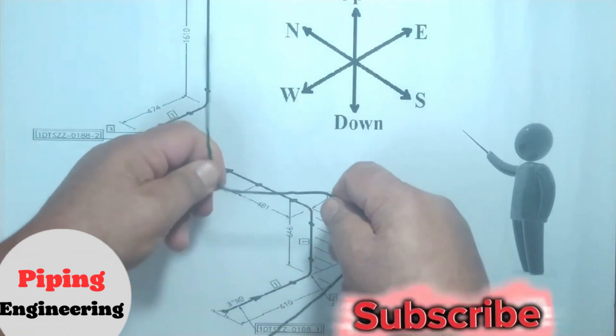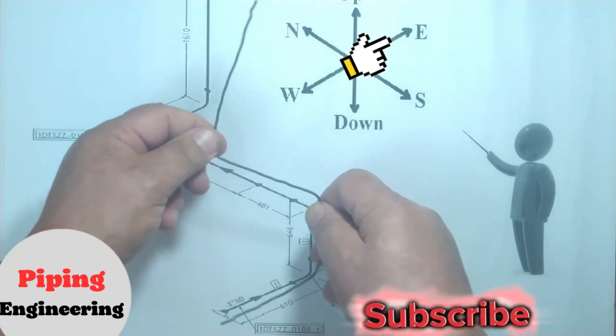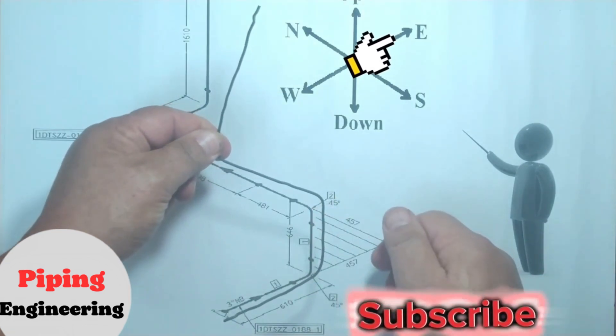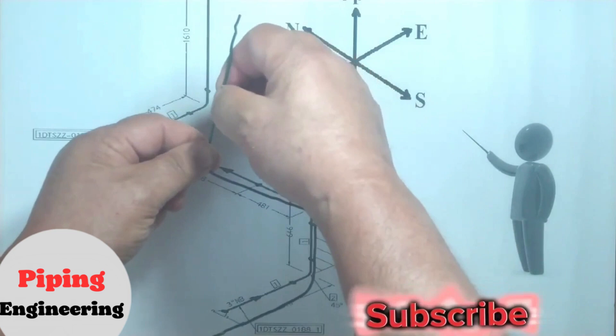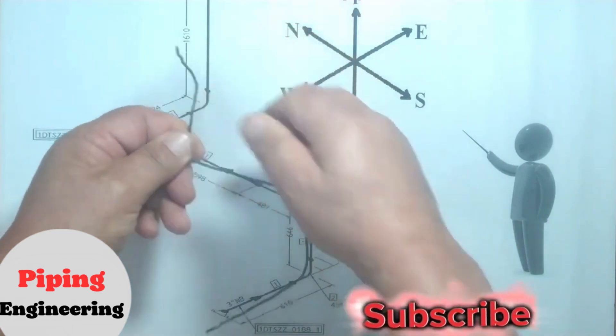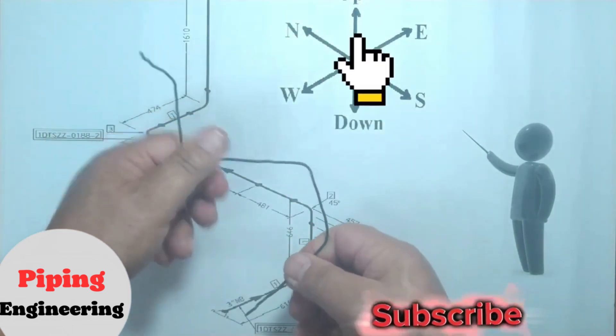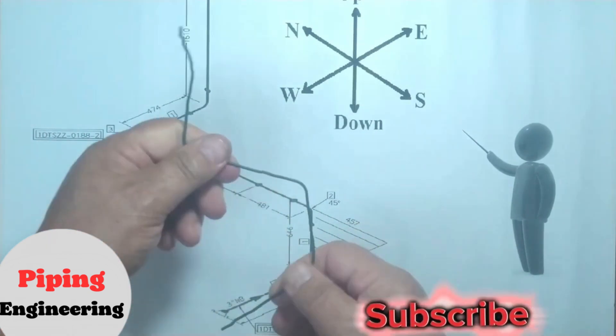At this point the pipeline turns eastward with a 90 degree elbow. Then, the pipeline turns upward with a 90 degree elbow. With that, we've completed reading the piping isometric drawing.